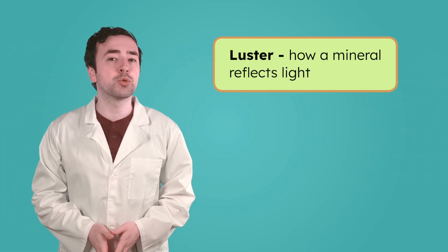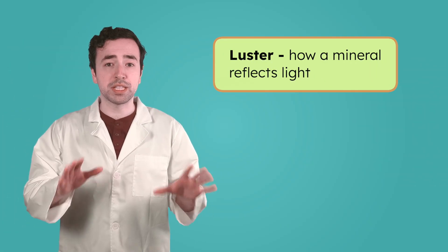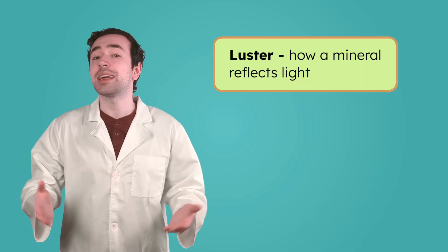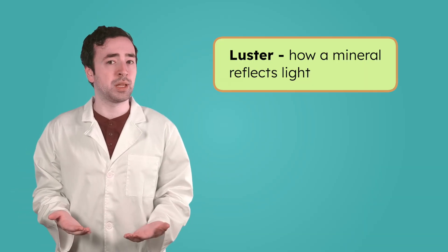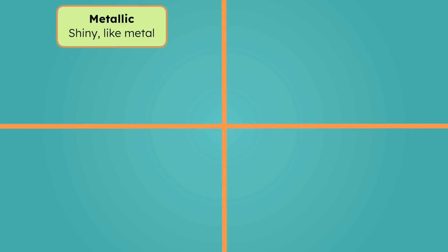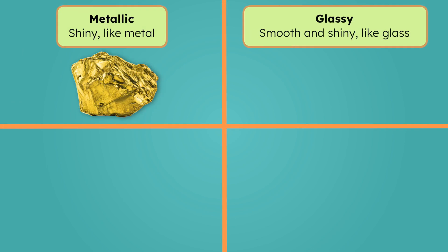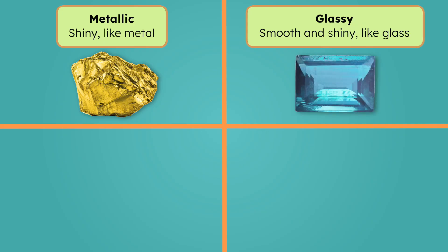Like luster. Luster is how a mineral reflects light, or simply put, how shiny it is. Minerals can have a bunch of different types of luster. Minerals with a metallic luster are shiny like metal, like the mineral gold. A glassy luster is smooth and shiny, like glass. Minerals with a glassy luster, like topaz or emeralds, are often used in jewelry.